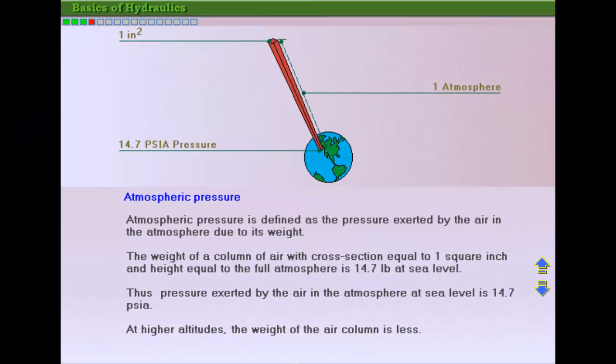Atmospheric pressure is defined as the pressure exerted by the weight of the air in the atmosphere. Atmospheric pressure at sea level is 14.7 psia, or pounds per square inch absolute. This value is lower at higher altitudes and higher below sea level.